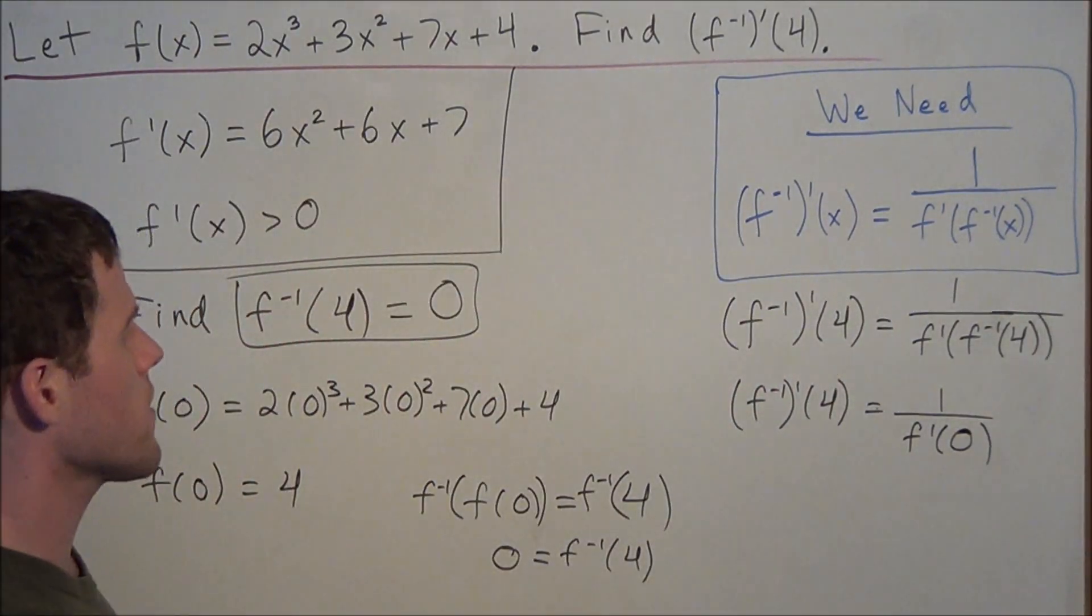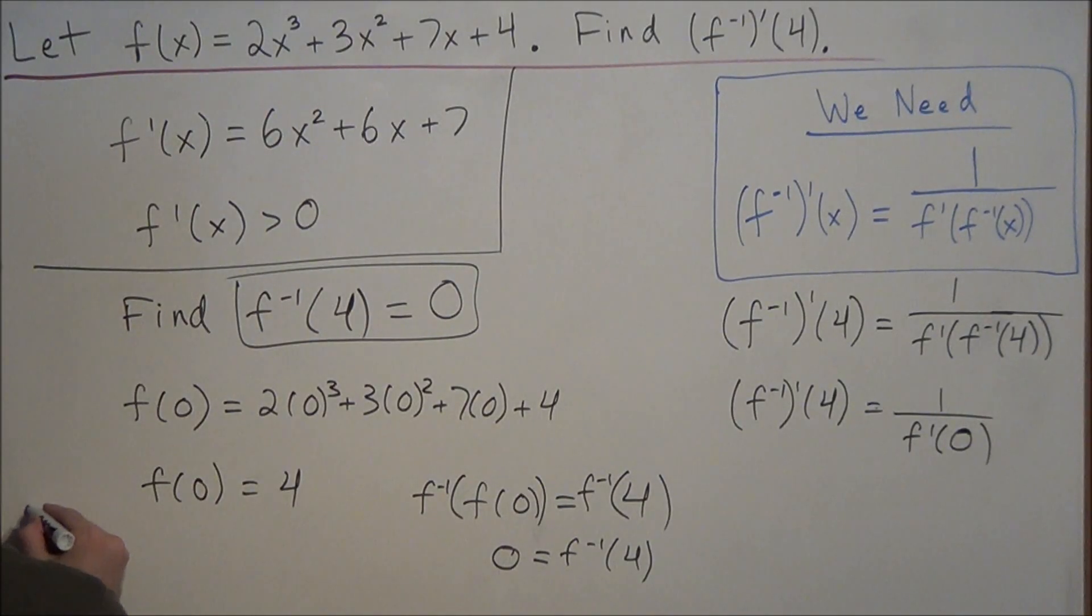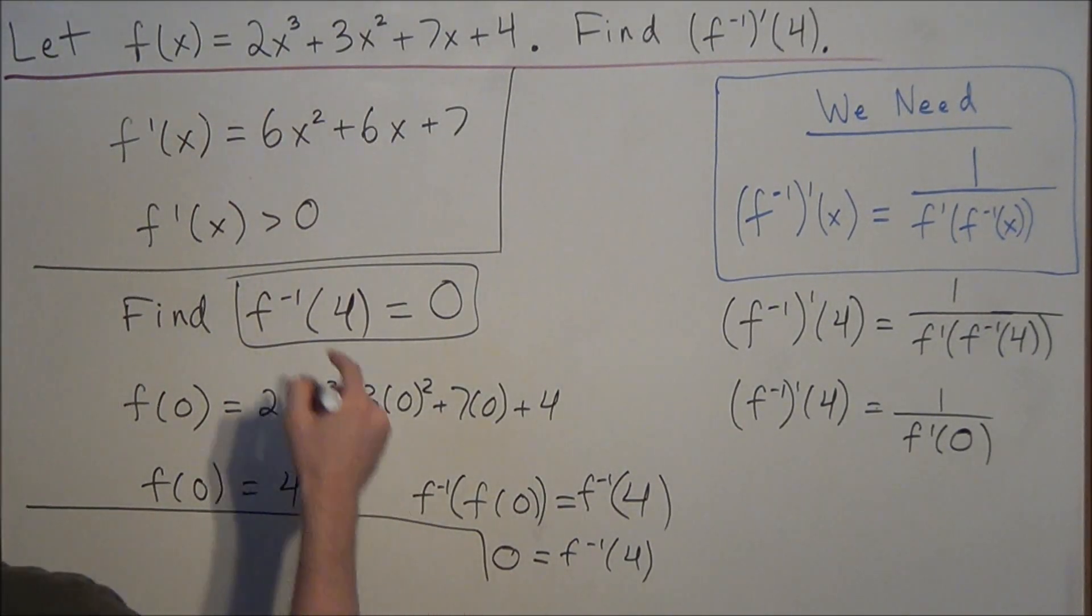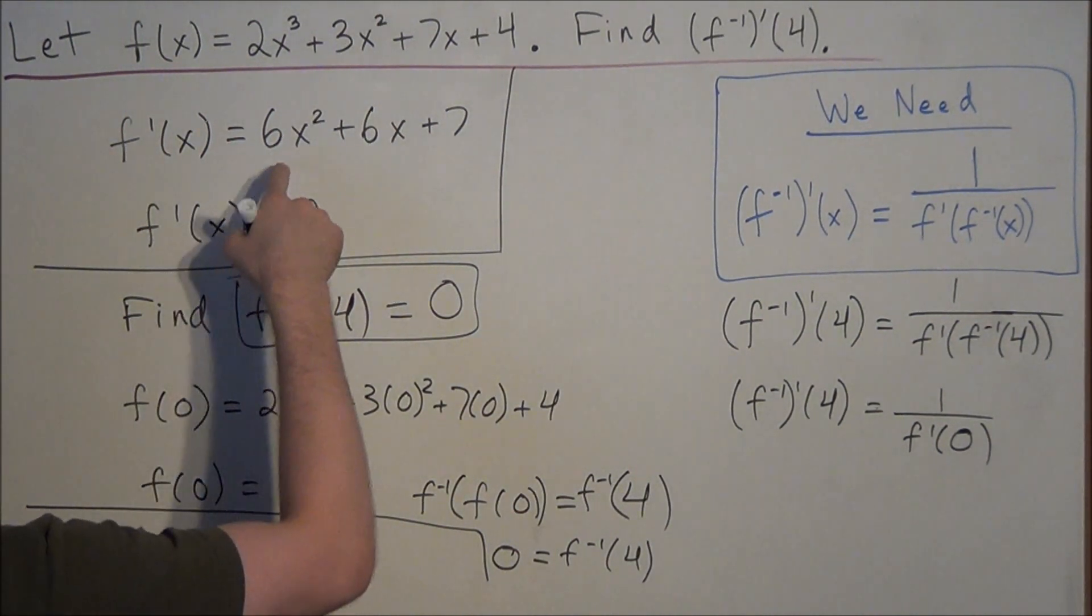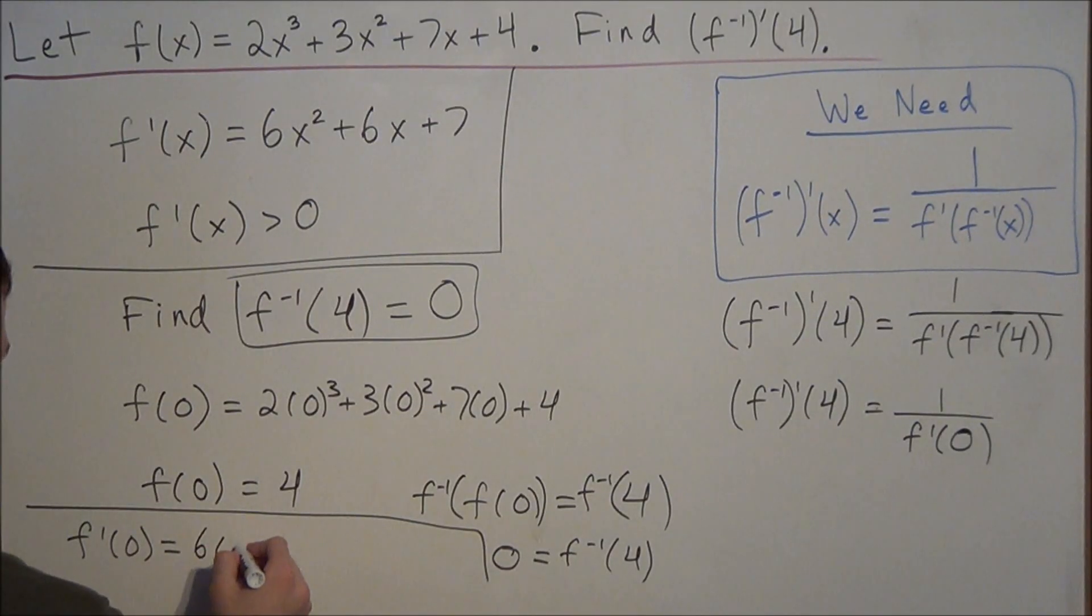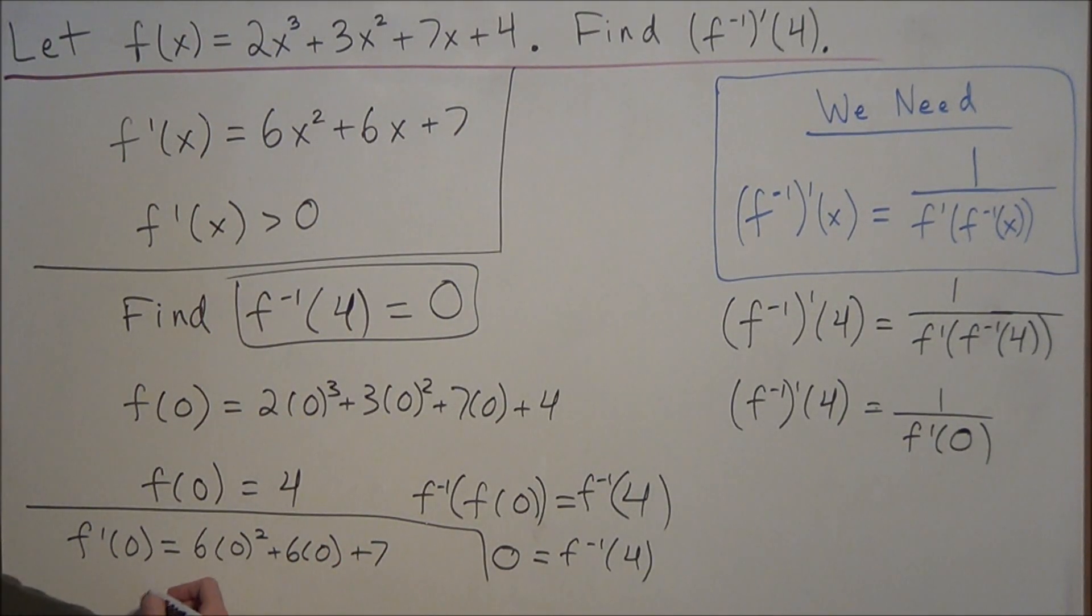So now all we need to calculate is f prime at 0. So we'll write that over here in this section. And we have f prime of 0 equals 6 times 0² plus 6 times 0 plus 7. So f prime of 0 is equal to 7.